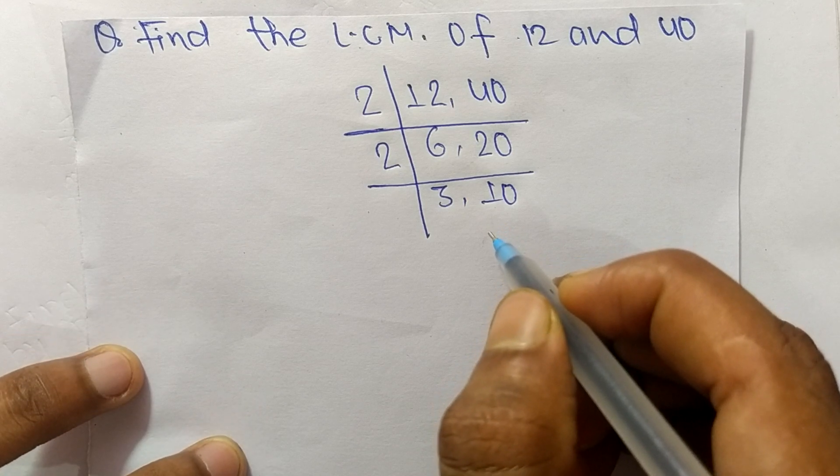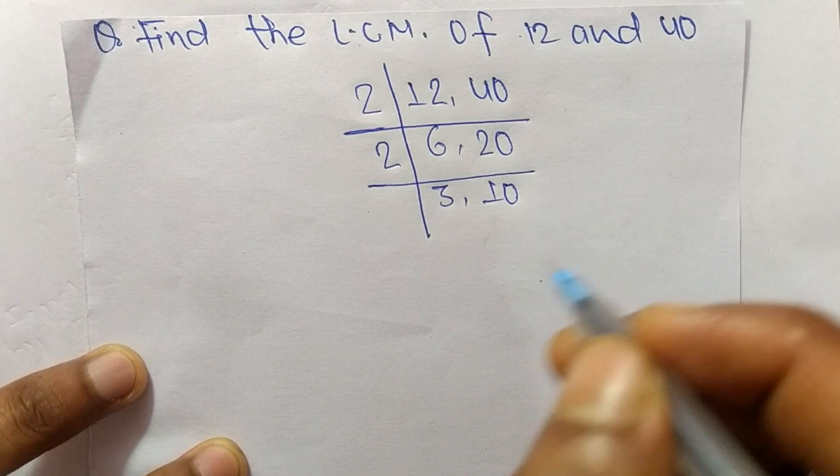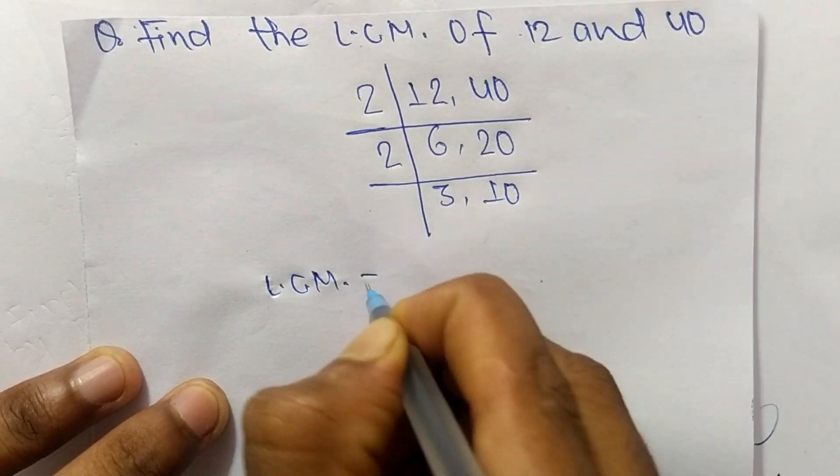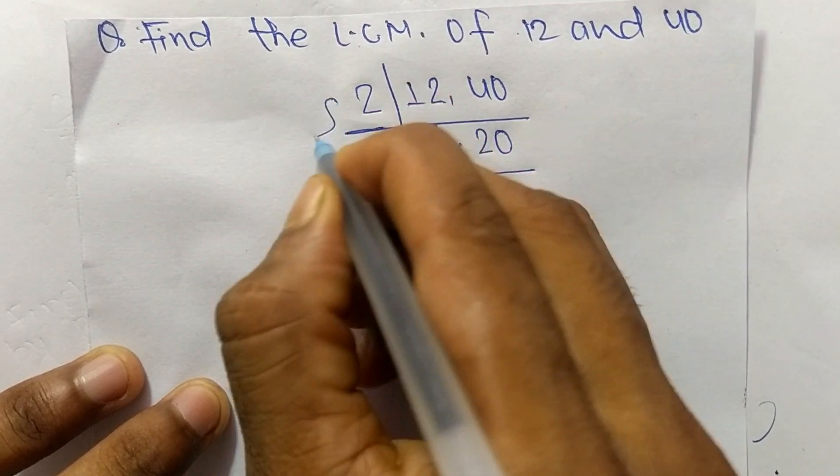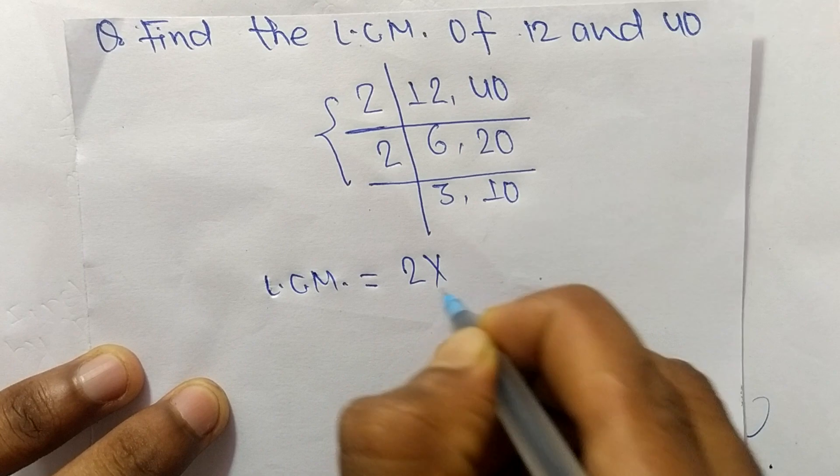So we have numbers here 3 and 10 which are not exactly divisible by the same number. So its LCM is equal to, from this part it is 2 times 2, and from this part it is 3 times 10.